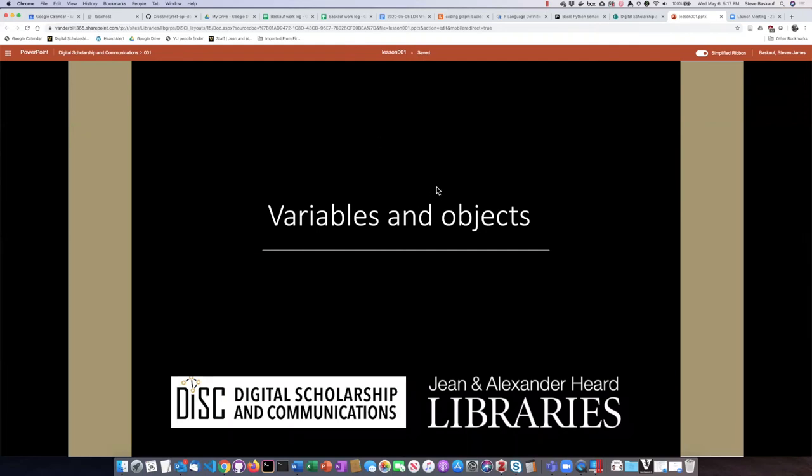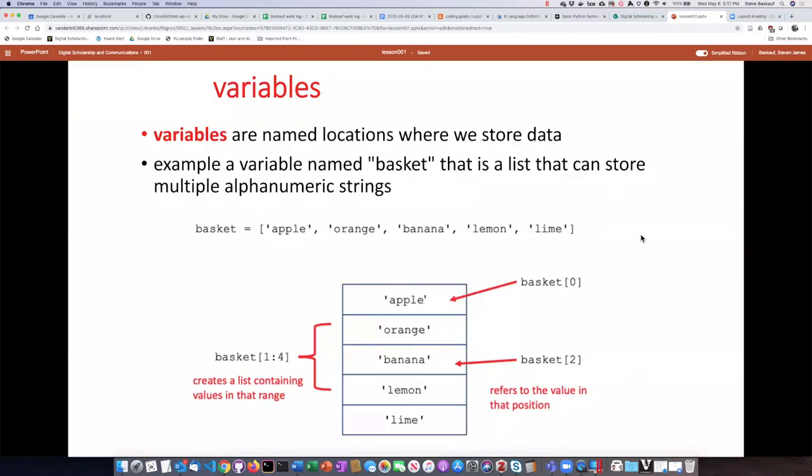Two very commonly used terms in programming are variables and objects. A variable is basically a slot or a location where we can store different kinds of data. You could think of it as like a mailbox that you can put data into.